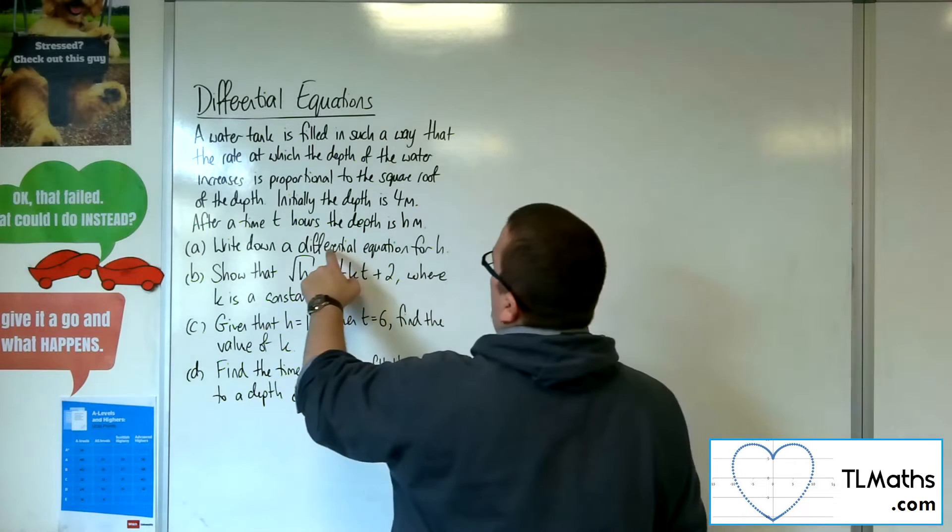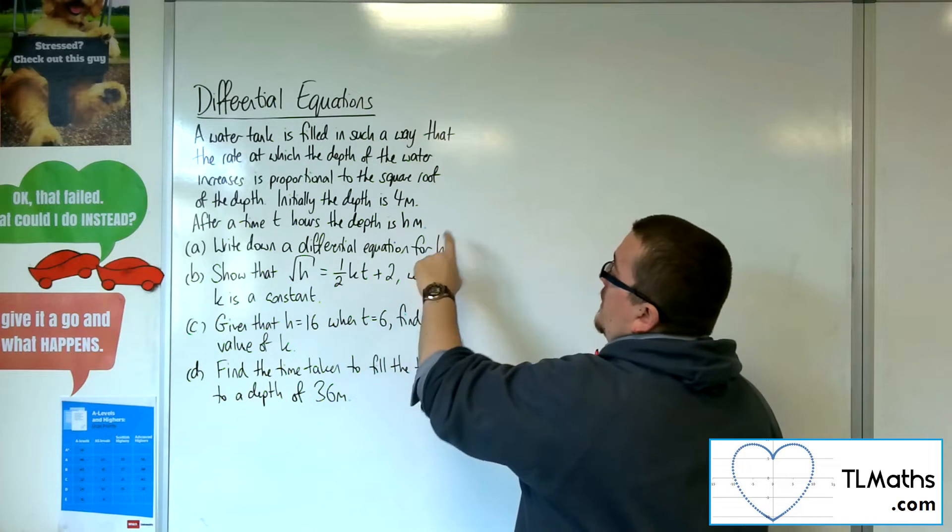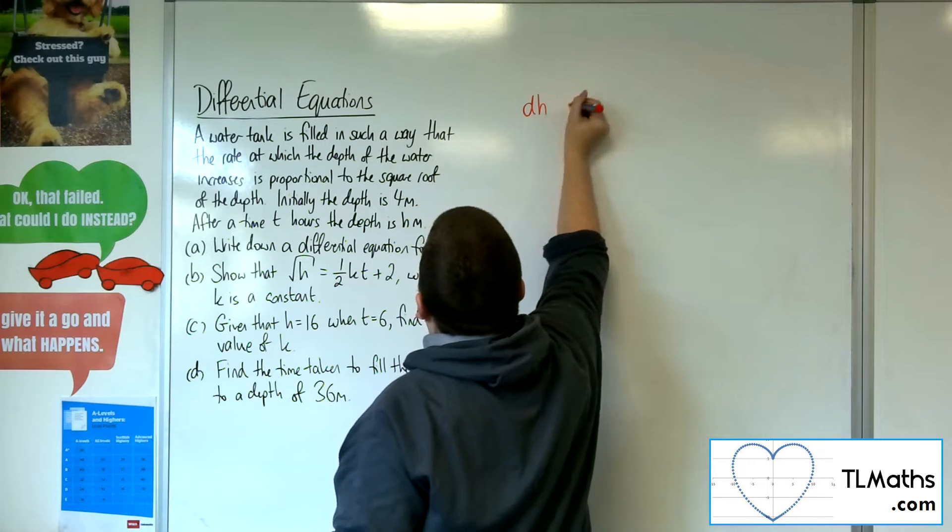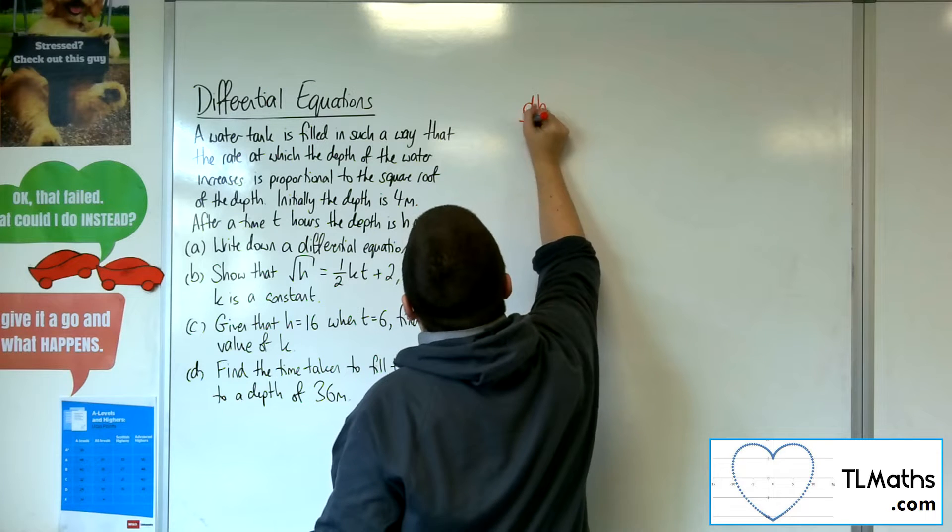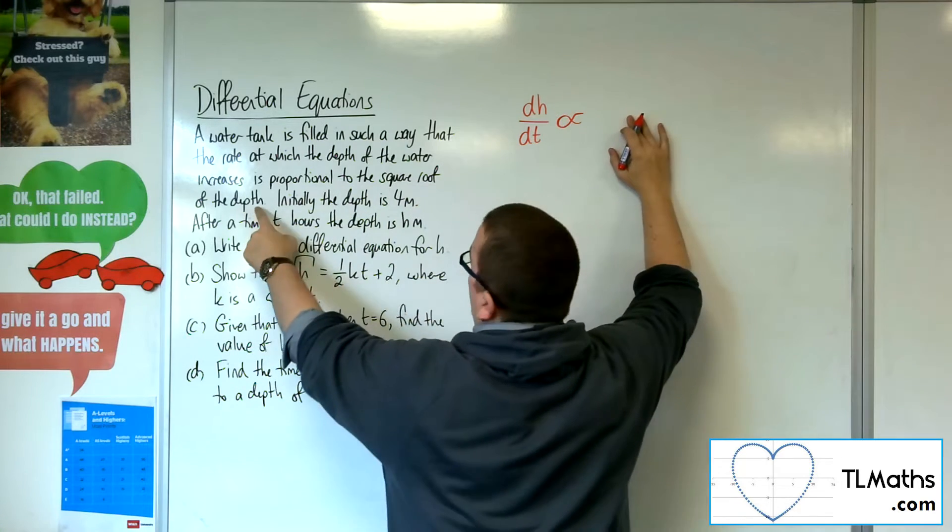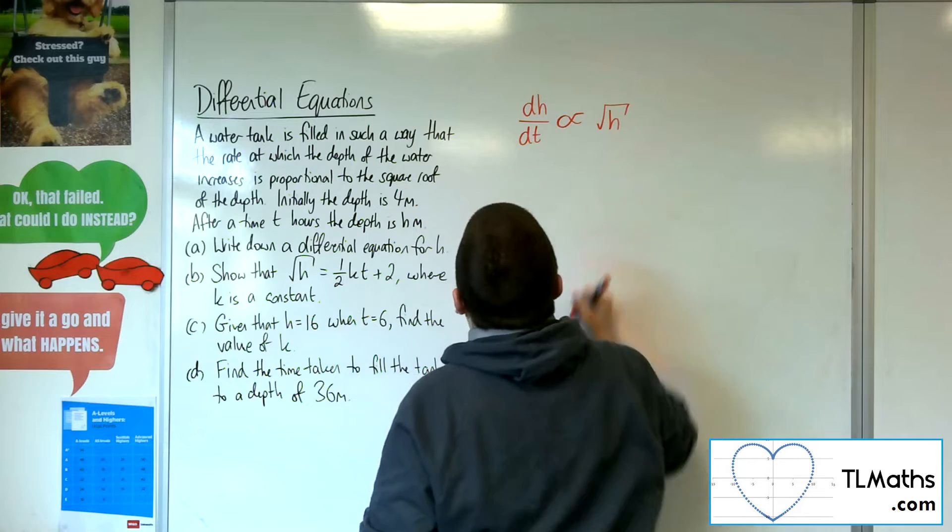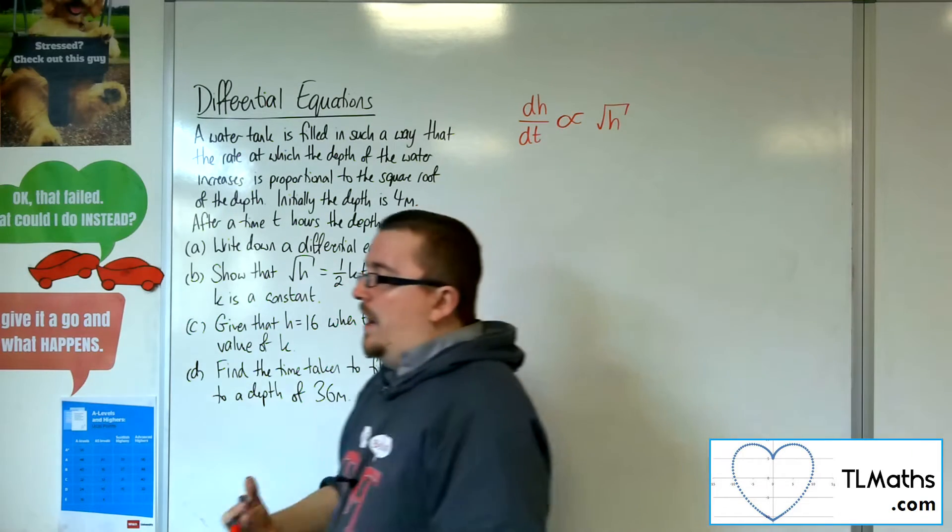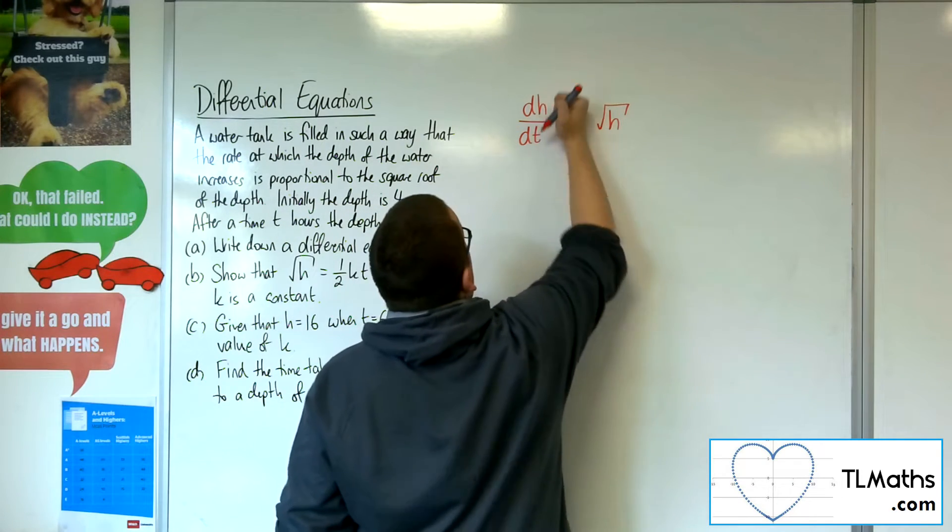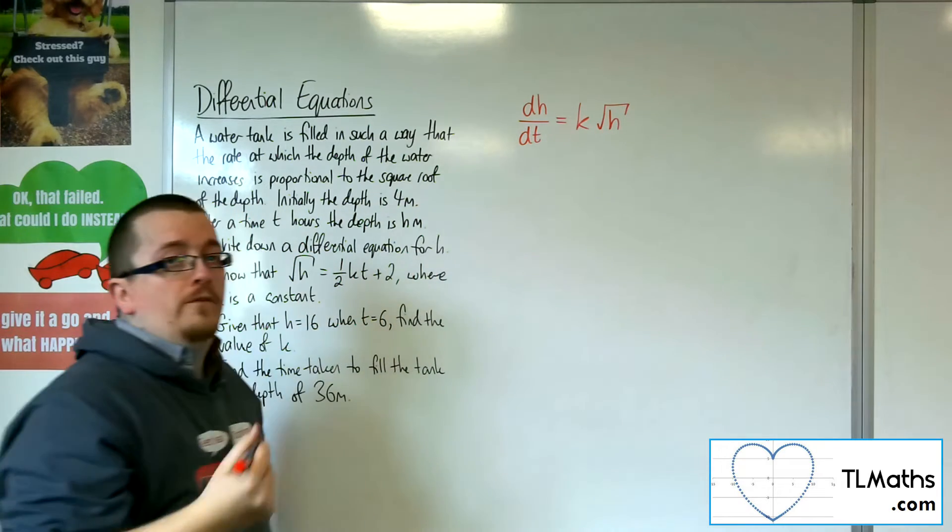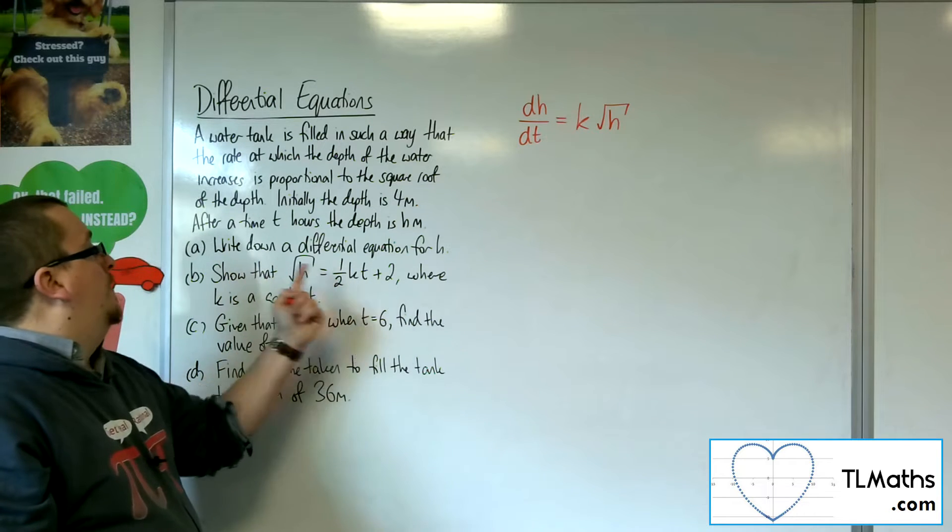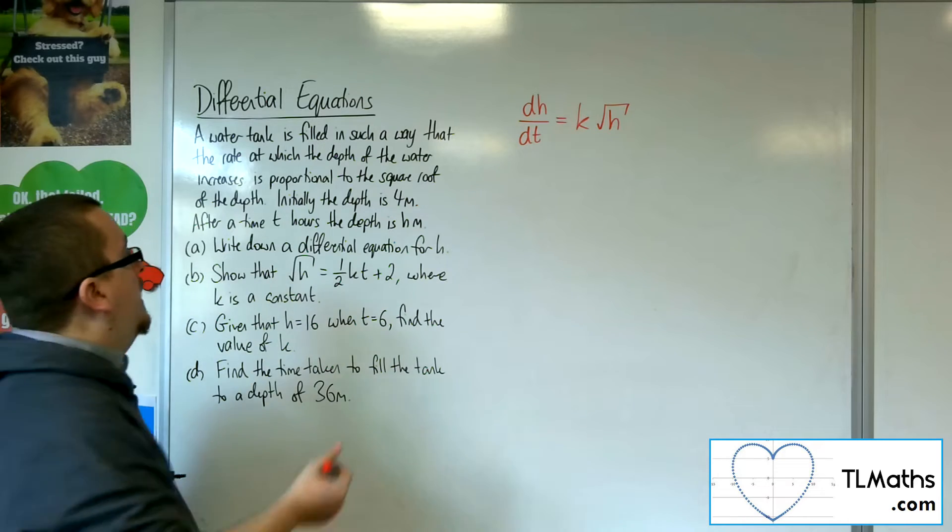Because we know we've got a differential equation for h, the h is representing the depth of this tank of water. So the rate at which the depth of the water, or the depth of the tank, is changing with respect to time, we're saying is proportional to the square root of the depth. So we would write that. Now we know that if we're saying that dh by dt is proportional to root h, then dh by dt is equal to k lots of root h. So that is my first bit for part a. So that's my answer to a.